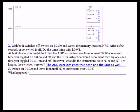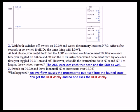Whatever you do, you can only let it execute once for each event — not just leave it on and let it continually increment. We had you switch on memory location I:0/0 and leave it on until N7:0 exceeded 32,767 — that's the high limit for a 16-bit signed integer. What happened? An overflow causes the processor to put itself into the faulted state. You get what I always refer to as the 'red winky' — the fault light winking at you like it knows something you don't.